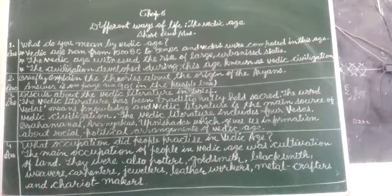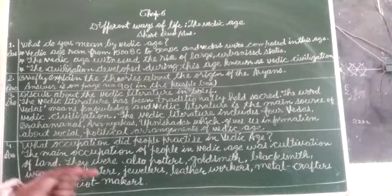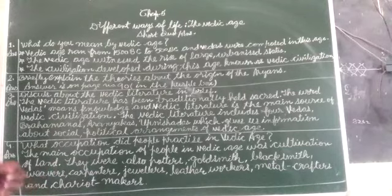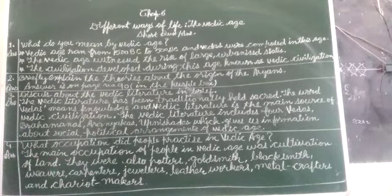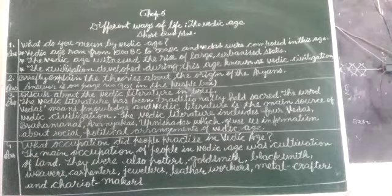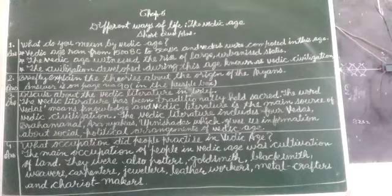Chariot makers means those who made chariots. Metal crafters means those who crafted items in different metals — iron, bronze, and other metals. These were the occupations of people in the Vedic Age. So children, these are the four short question answers that you have to do in your notebook. If you have any problem, you can ask me.